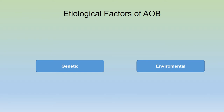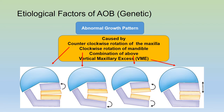What are the etiological factors of an anterior open bite? They can be classified into two big groups: either genetic factors or environmental factors. Genetic factors mean an abnormal growth pattern, and usually this is because of a counter-clockwise rotation of the maxilla, or a clockwise rotation of the mandible, or a combination of both.